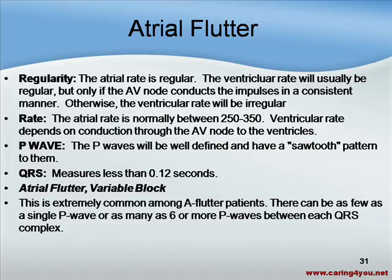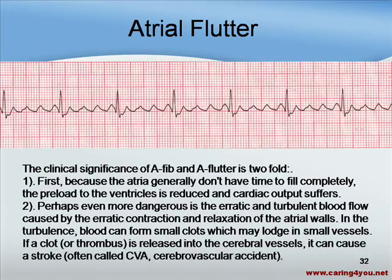Atrial flutter with variable block is extremely common among atrial flutter patients. There can be as few as a single P wave or as many as six or more P waves between each QRS complex. On the strip here, we see one, two, three, four P waves between each QRS complex. This is what is known as atrial flutter.